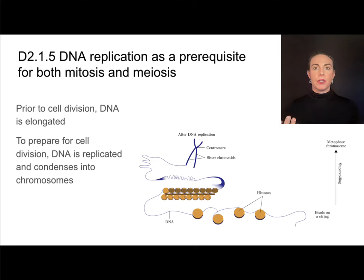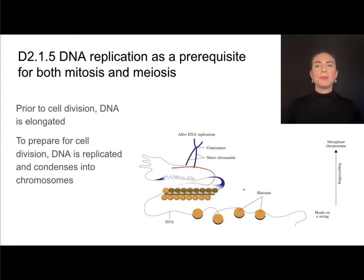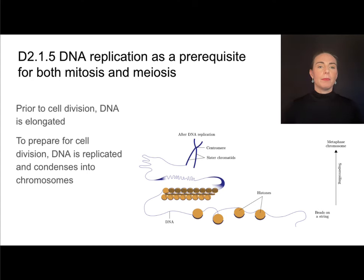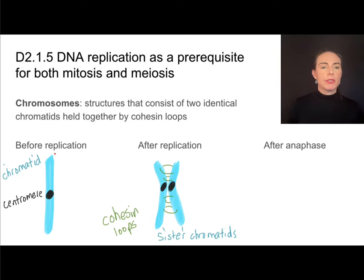Before cells can divide, they must replicate their genetic material — that is a prerequisite for both mitosis and meiosis. Prior to cell division, DNA is elongated and usually in a form called chromatin — a little loosey-goosey — and there are reasons for that involving transcription, translation, and a cell's ability to function. But during cell division, we really need that DNA and genetic material to be much more organized. So two things are going to happen: DNA is replicated, and it also condenses into chromosomes — the shapes you typically associate with our genetic material.